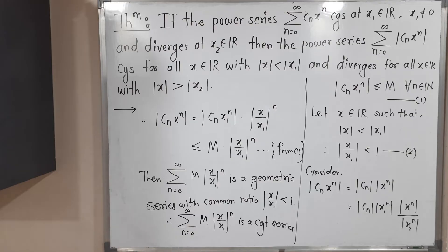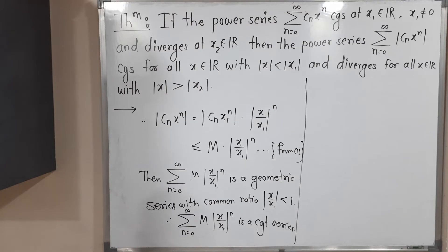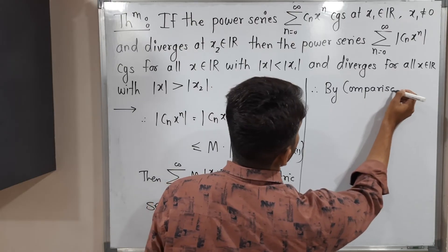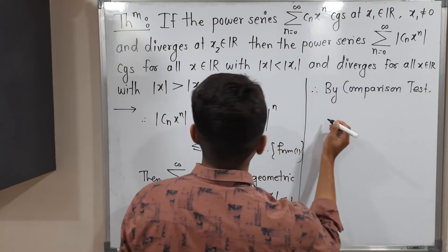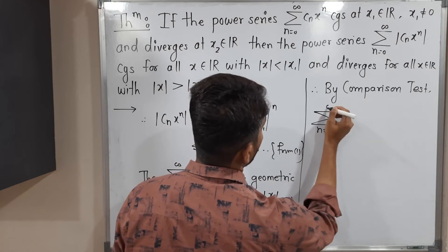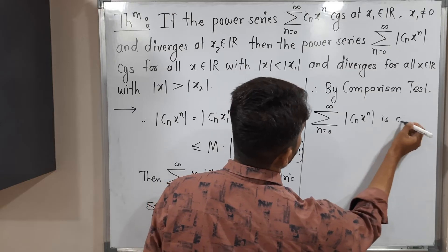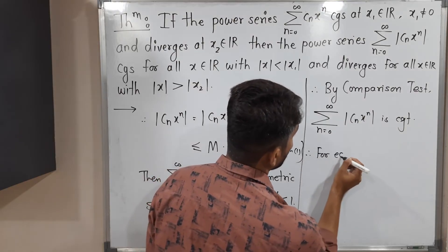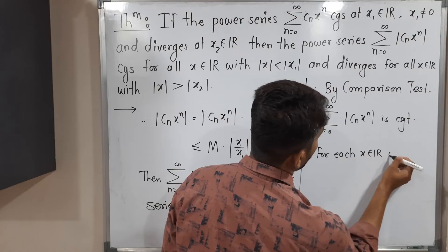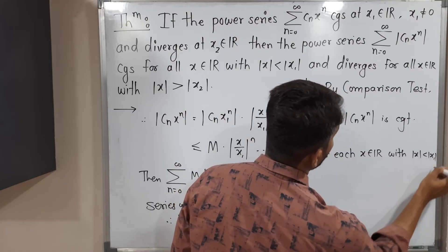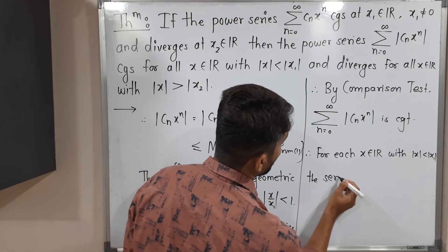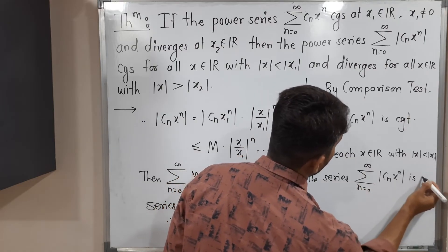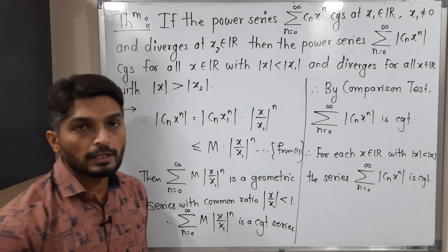Therefore, by the comparison test, the series summation n from 0 to infinity of mod cn·x^n is convergent. So the conclusion for part 1: for each x belonging to the real numbers with mod x less than mod x1, the series summation n from 0 to infinity of mod cn·x^n is convergent, meaning the series is absolutely convergent.